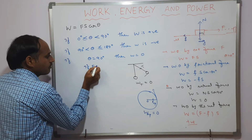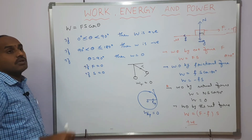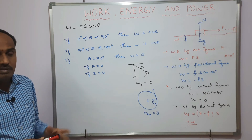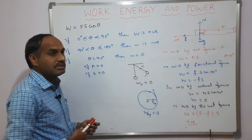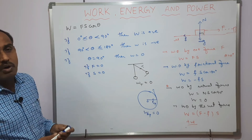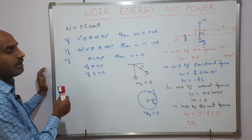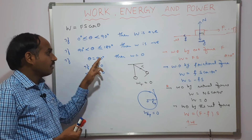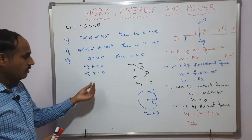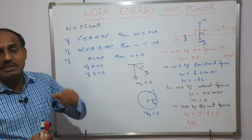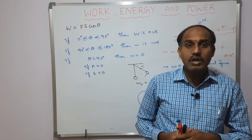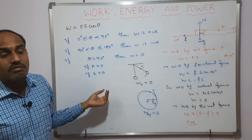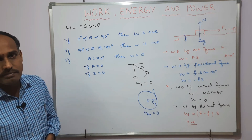Work done is also zero if force is zero — if no external force acts, even if the body displaces, no work is done. Also, if force is applied but displacement is zero — like pushing a wall — even though external force is applied, since the wall doesn't displace, work done is zero. Work is done only when a force causes actual displacement.